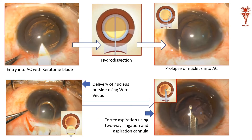Next, we use an entry keratome — previously we were using a crescent blade. This entry keratome is used to enter the tunnel we have created and extend it to approximately six millimeters in size.